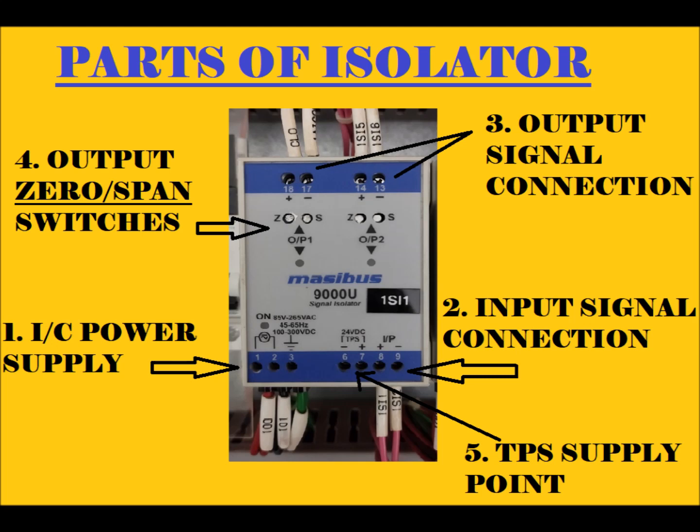Next, we will look at the parts of the isolator. The first is Incoming Power Supply or auxiliary power supply. Second is Input Signal Connections or Input Signal Points. Third is Output Signal Connections or Output Signal Points — there are two of these. Fourth is zero and span adjustment, and the fifth point is TPS supply point. We will discuss all of these in the next slide.